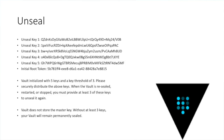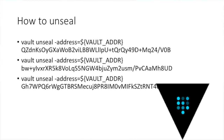To unseal, you would say: vault unseal, provide an address, then the first key, second key, and third key. Once you do all that, it would actually unseal, and you can start using Vault to encrypt your information or store your secrets.